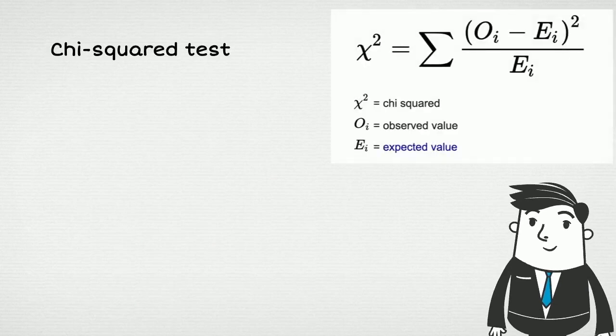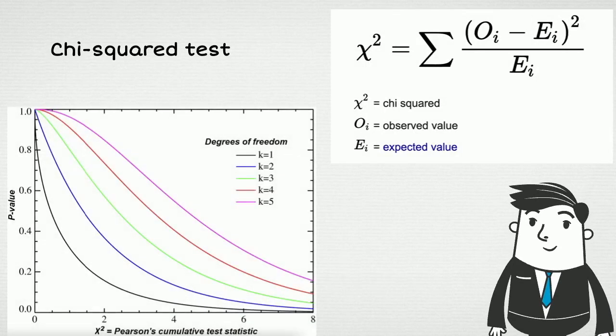The chi-squared test looks at the observed difference between groups and compares it to the difference that would be expected due to random chance alone, given the size of the groups. In small groups, it is more likely to obtain large differences due to simple chance. If groups are large, such random differences are less likely. The chi-squared test takes that into account.